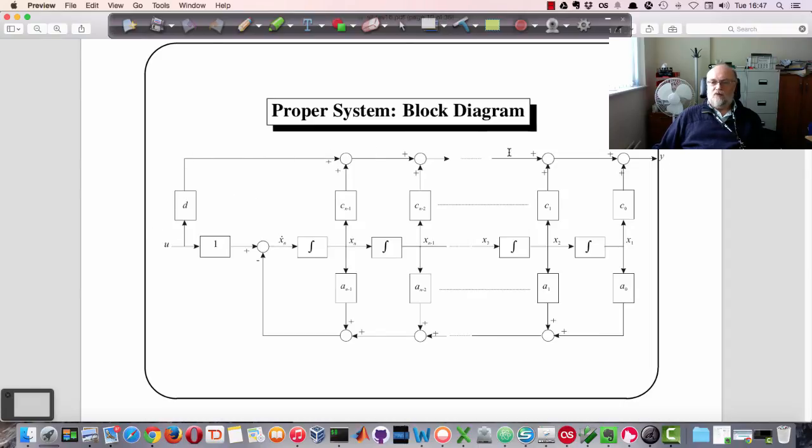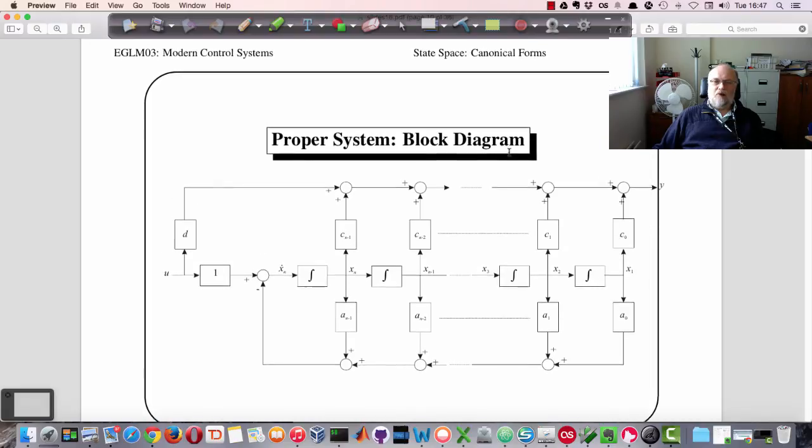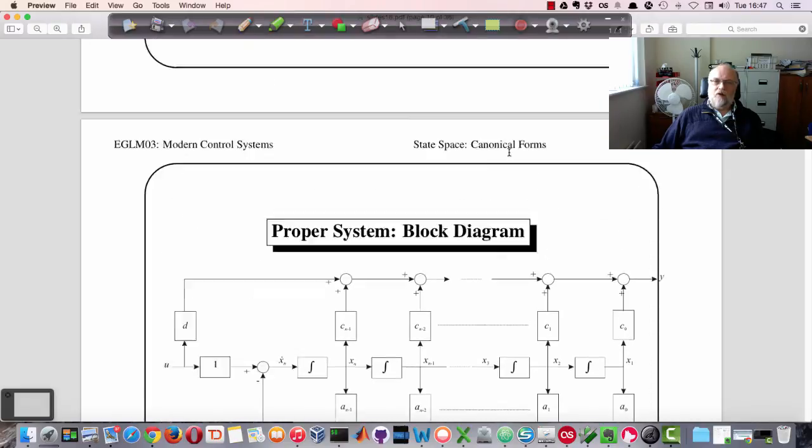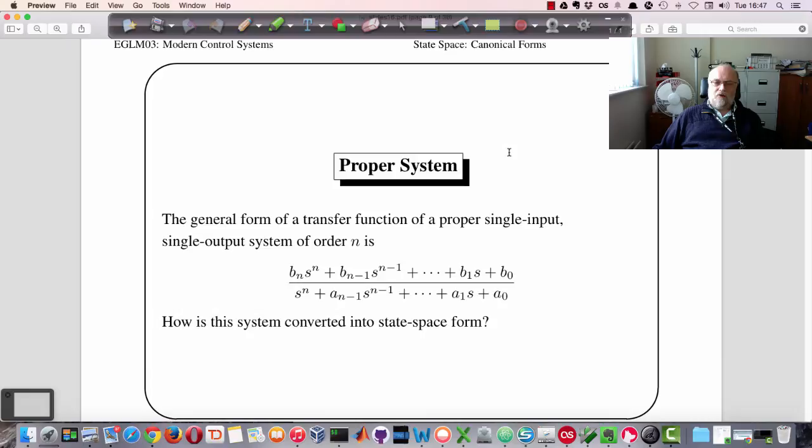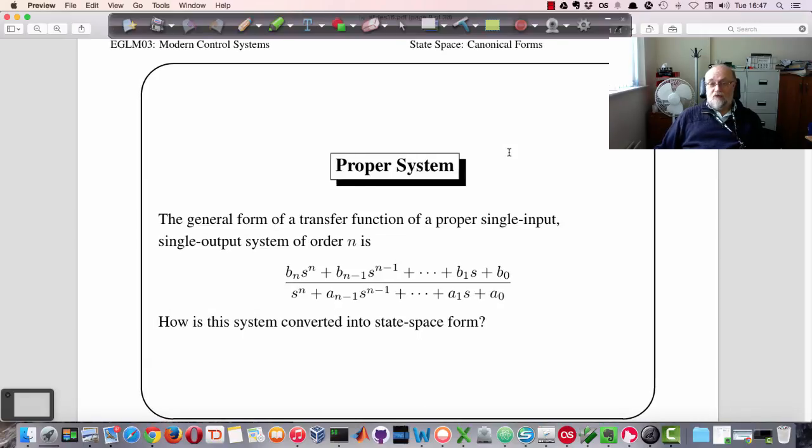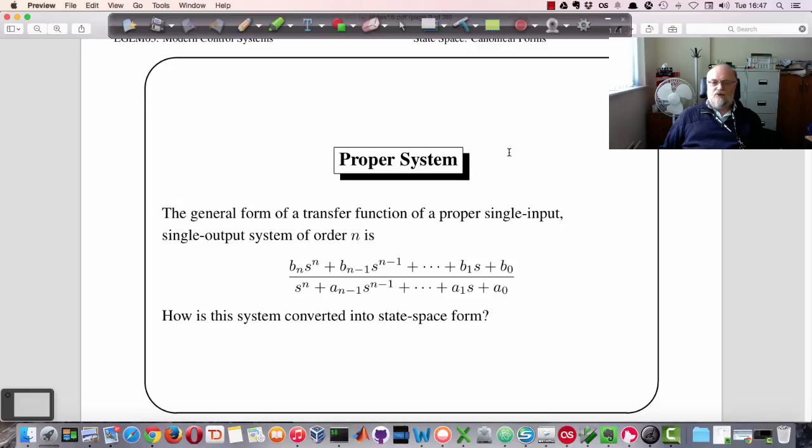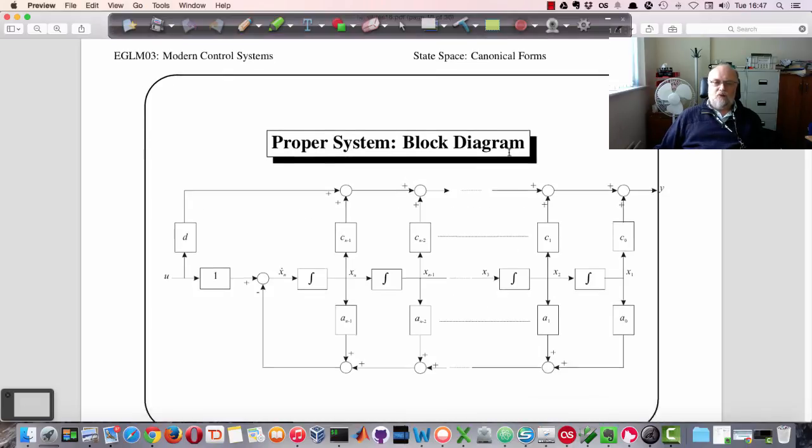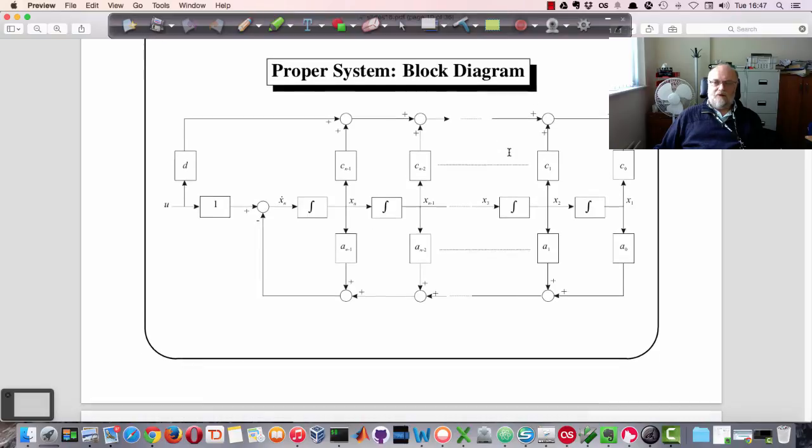So this is how you would get a d matrix from a transfer function, if you had that. That basically comes about when you have this proper system where the order of the numerator is equal to the order of the numerator. It doesn't occur that often in physical systems, but it is something that could occur and you need to be aware of. So we'll show you how this one is developed as well in the class.